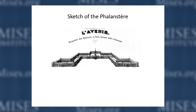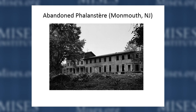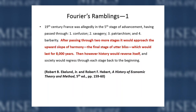He actually drew a picture of it — this is what it would look like. All human communities would be organized in this way, and people would live in these structures. He also built a model of it. Here is one phalanstère near my home in Monmouth, New Jersey. It's now abandoned and spooky — it doesn't look like it's fit for human habitation.